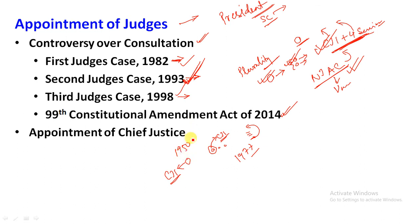The next part we will discuss is the qualification of judges, followed by tenure, and then judge removal — which is very important. The Supreme Court judge removal process is different from other courts. This is a very important process and we will discuss it in detail in the next video.